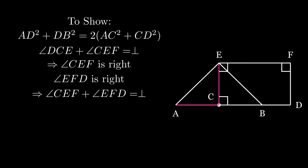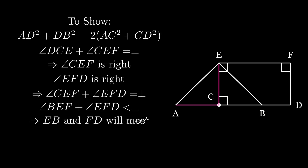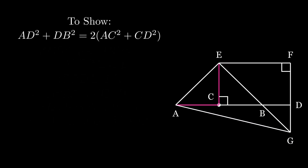Now note that angle CEF plus angle EFD will be less than two right angles, and therefore by the fifth postulate, if we produce EB and FD in the same direction they're going to meet somewhere. They'll meet at G, and then we connect AG. This concludes the construction.